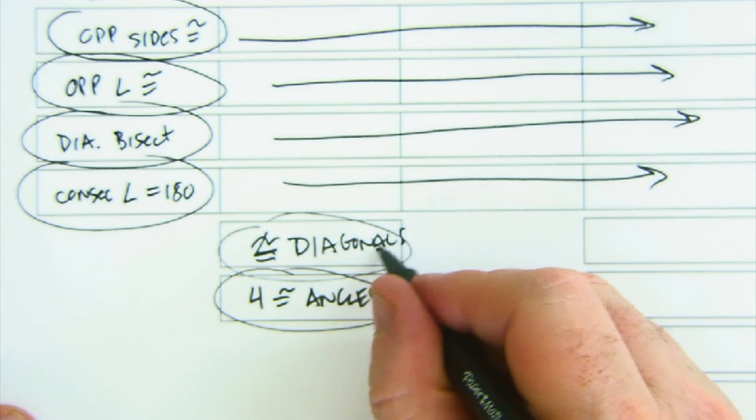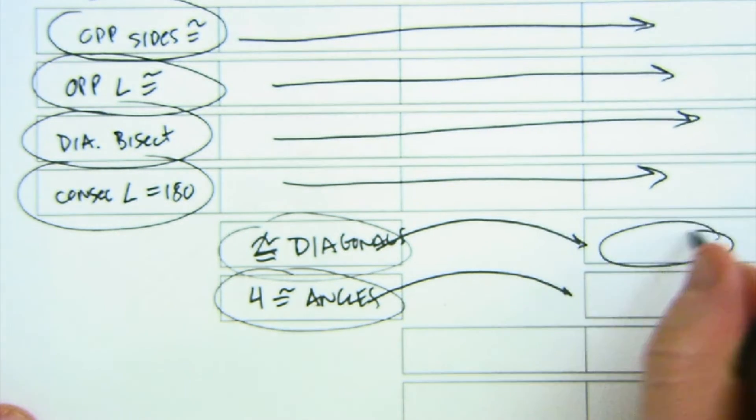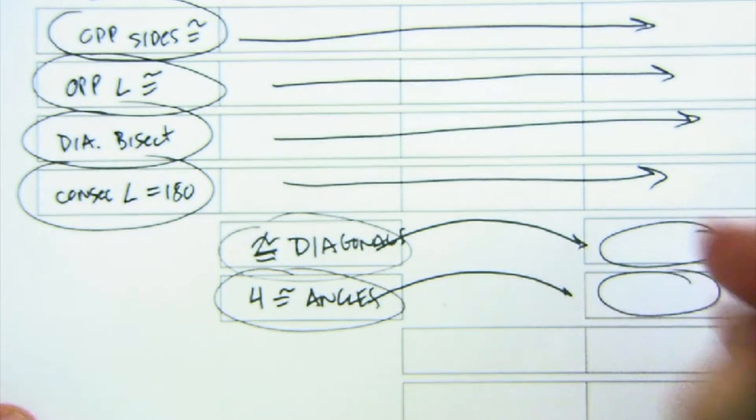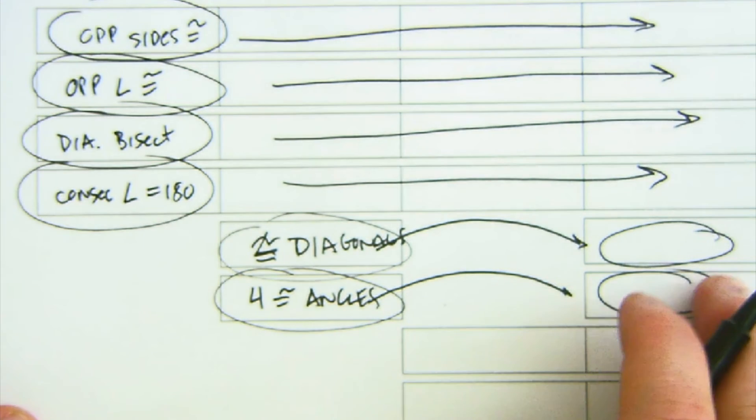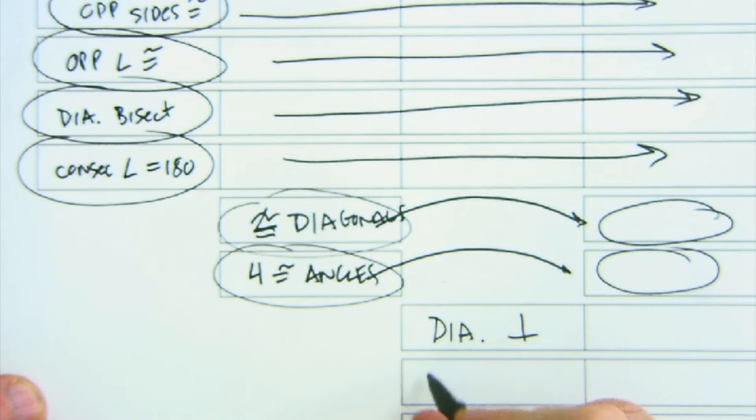So those same two properties show up in the square. The rhombus gains some new properties about its diagonals: the diagonals are perpendicular, the diagonals are angle bisectors.